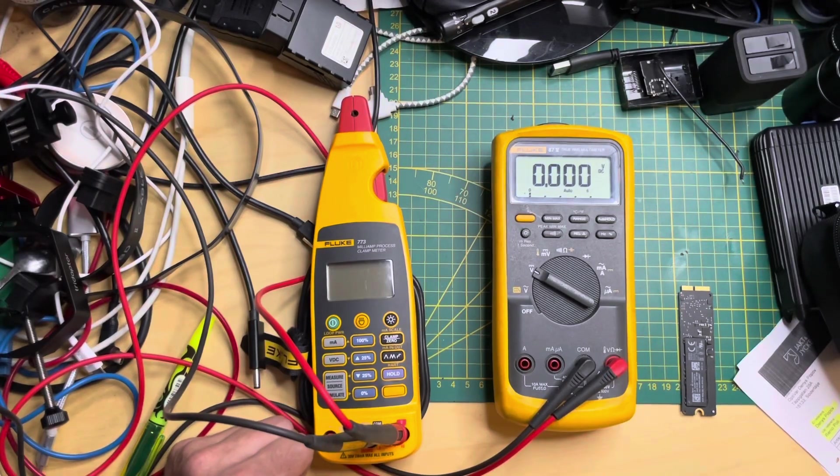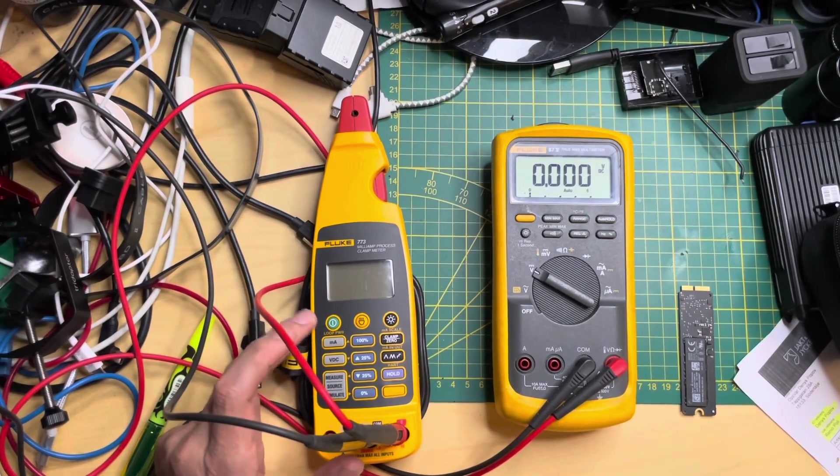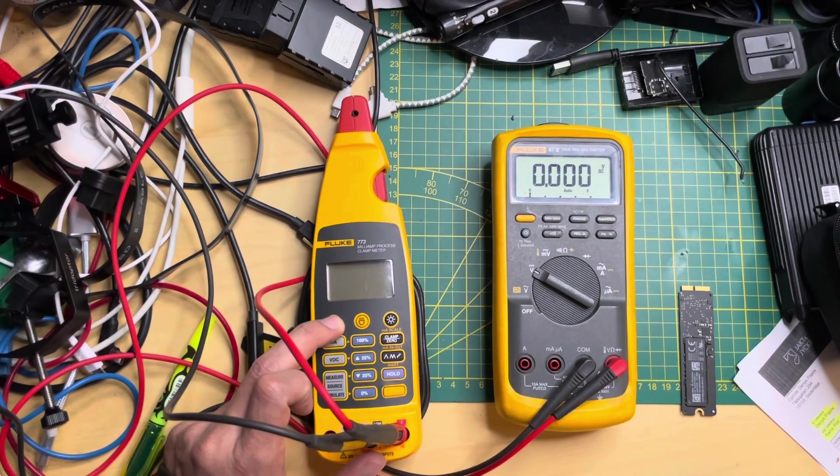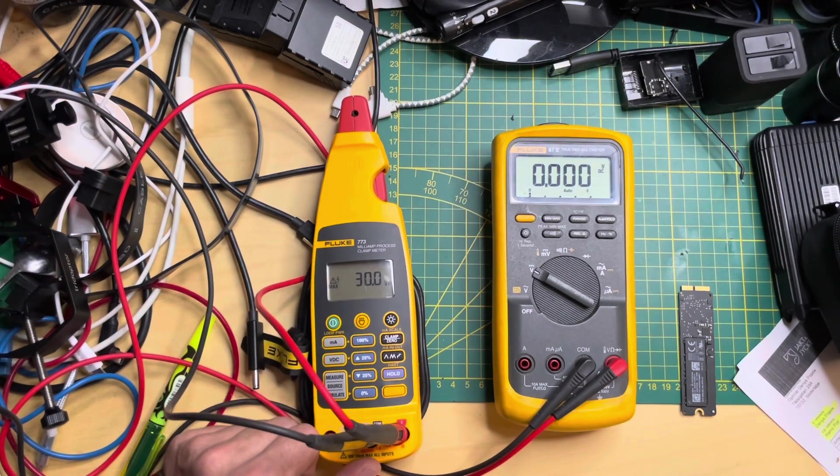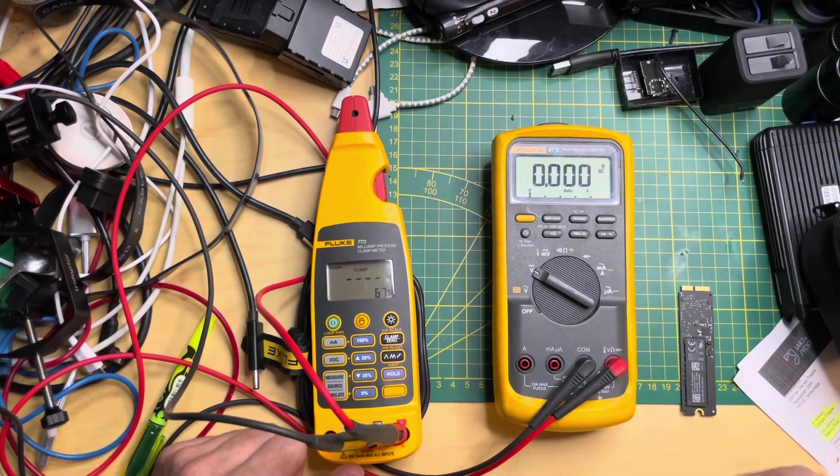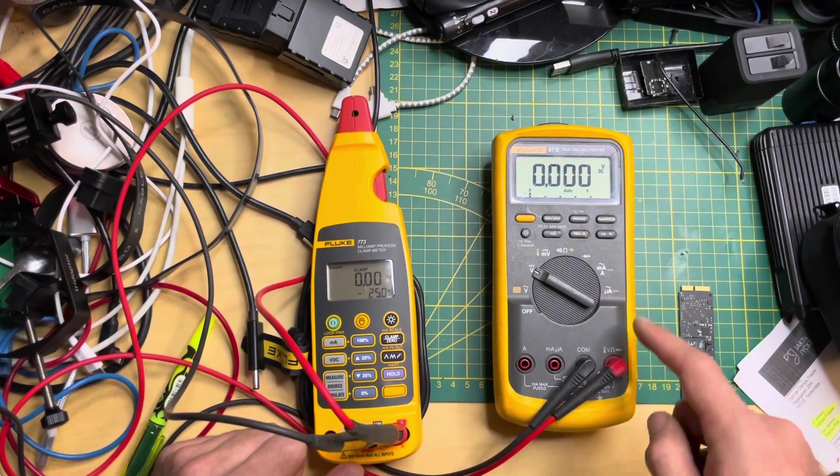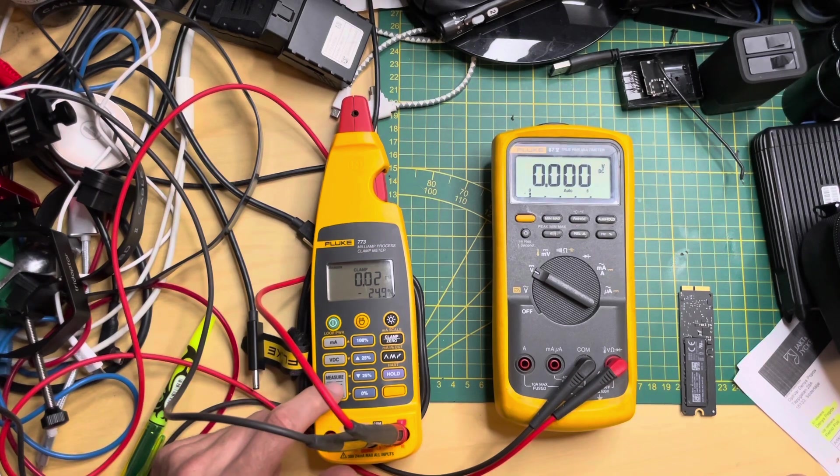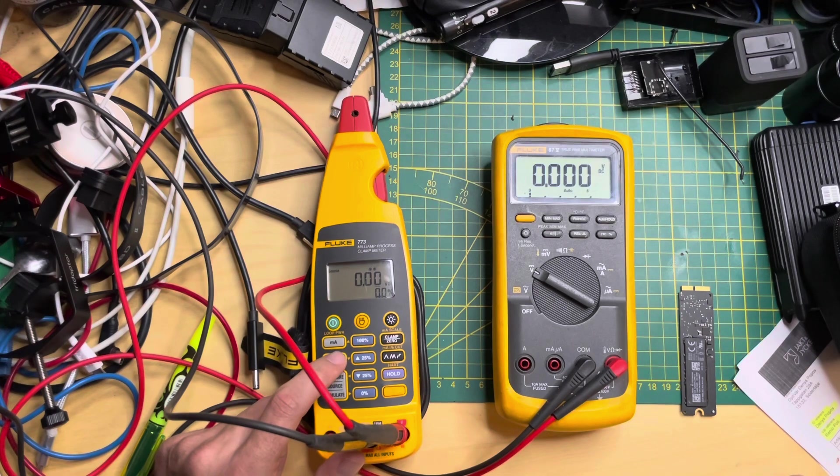Hi guys, now a quick test of the source functionality of the Fluke 773. You press the on button, connect the leads of the measuring device—in this case it's a Fluke 87—then go to the source where you can choose whether it's volts or amps.